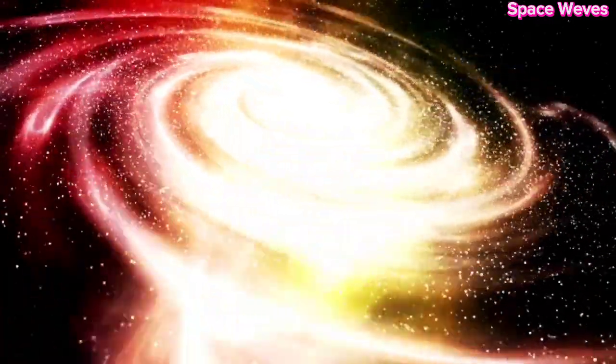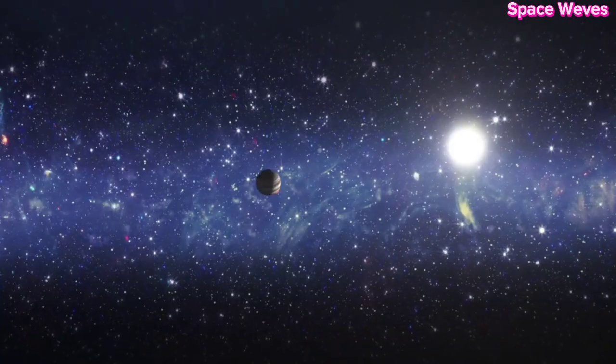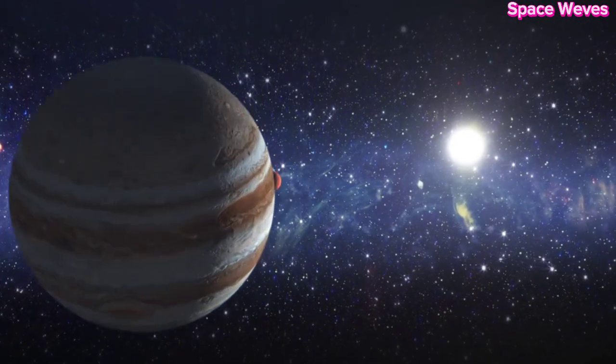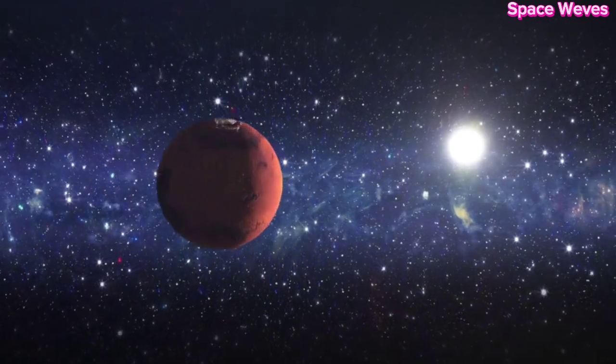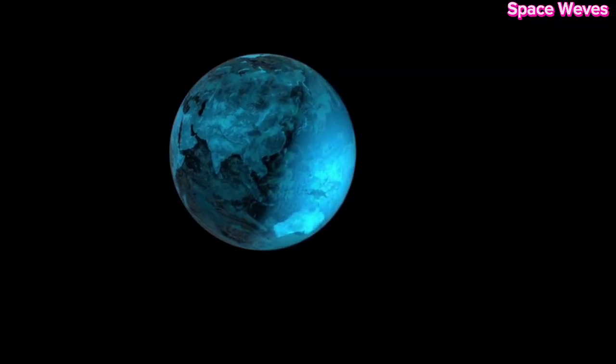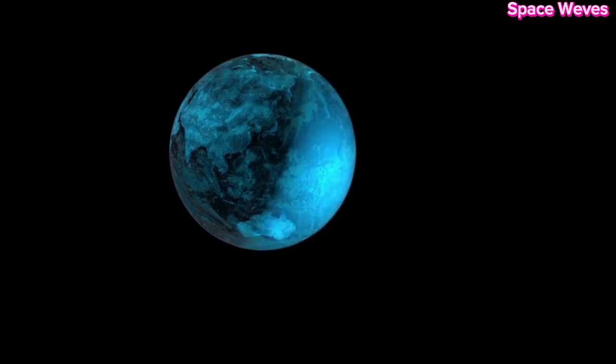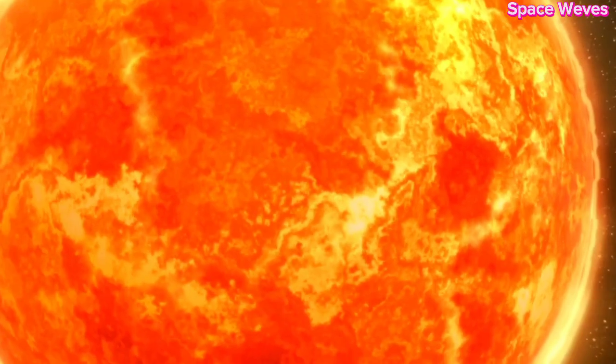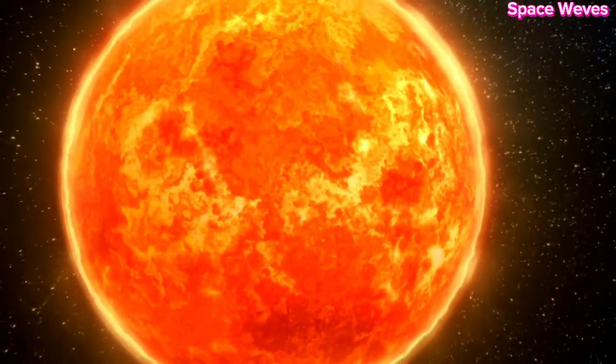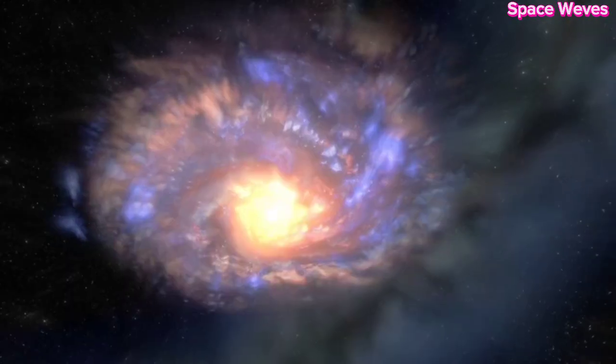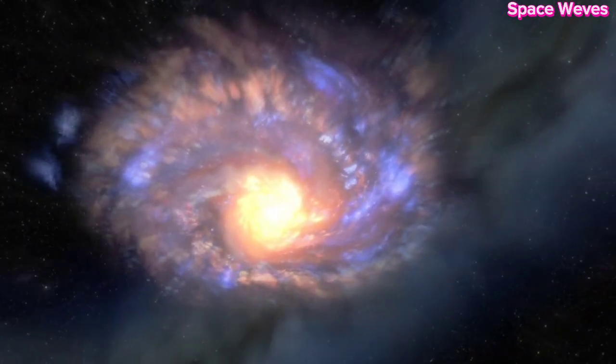Despite being approximately 642 light years from Earth, its immense size makes it one of the brightest stars visible to the naked eye. However, Betelgeuse has recently exhibited unusual behavior, including unexpected dimming and brightening cycles, which some experts believe indicate that the star is nearing the end of its life.